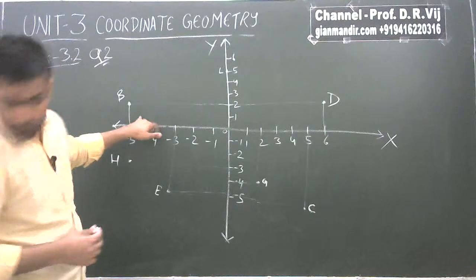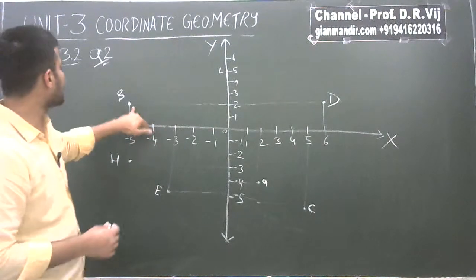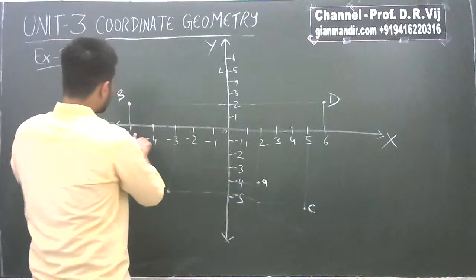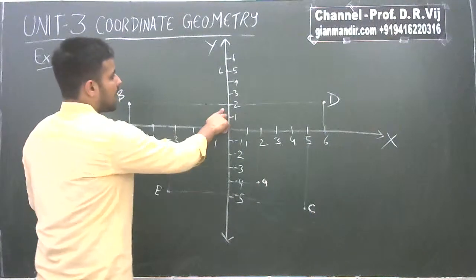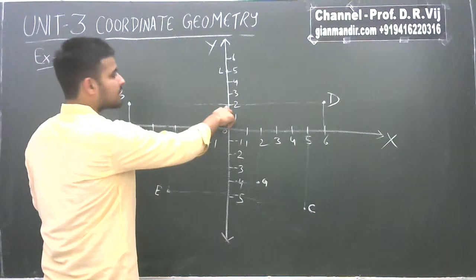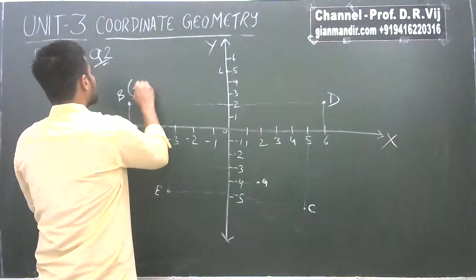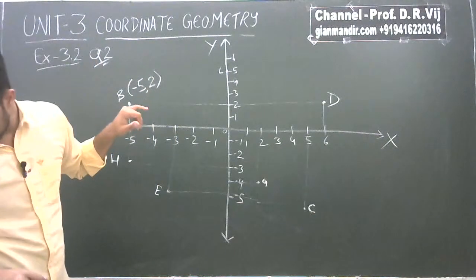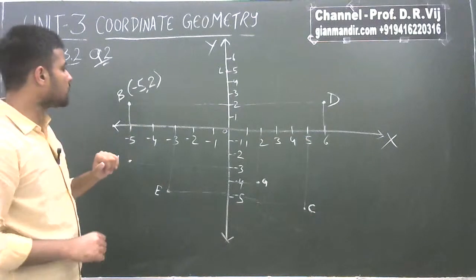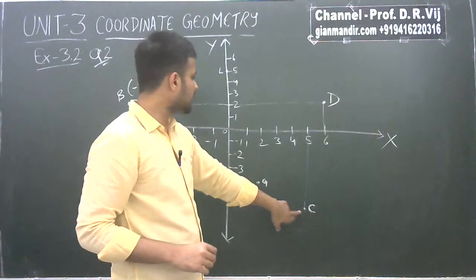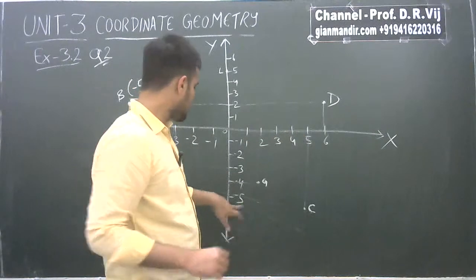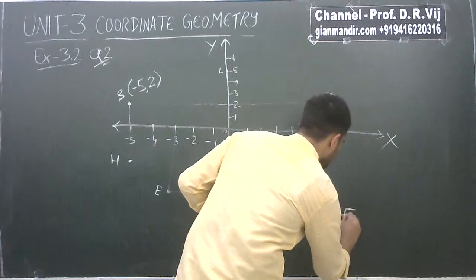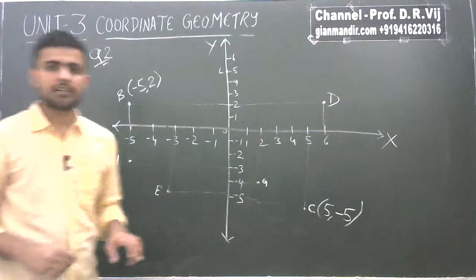First part is coordinates of B. What are the coordinates of B? On the X axis it is minus 5, and on the Y axis it is 2. So the coordinates are (-5, 2). Second part is coordinates of C. C is at X equals 5 and Y equals minus 5. So the coordinates of C are (5, -5).